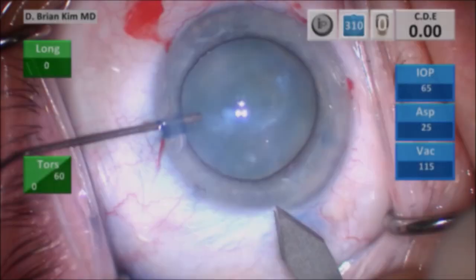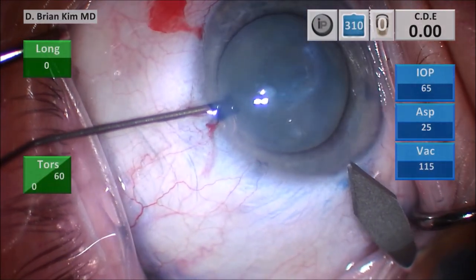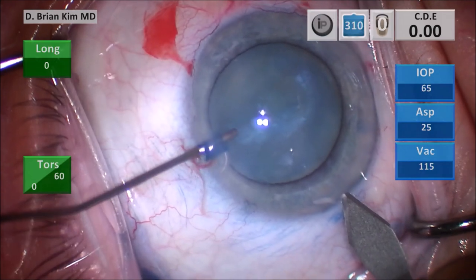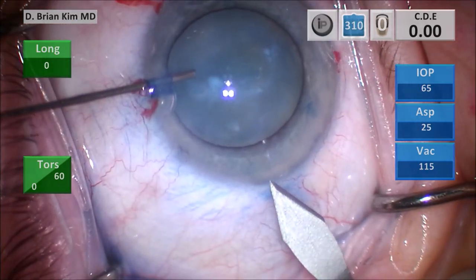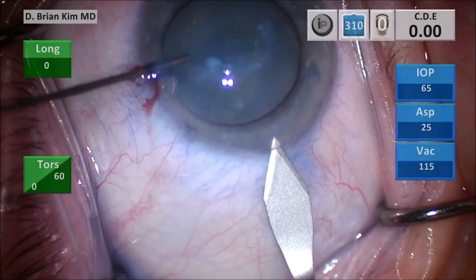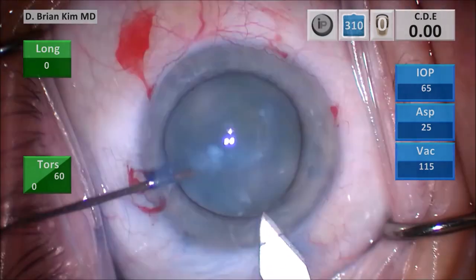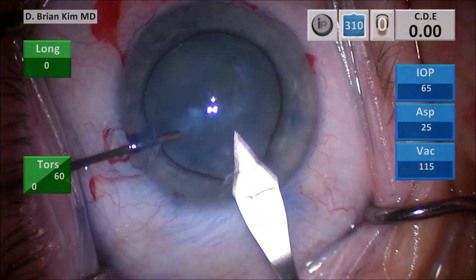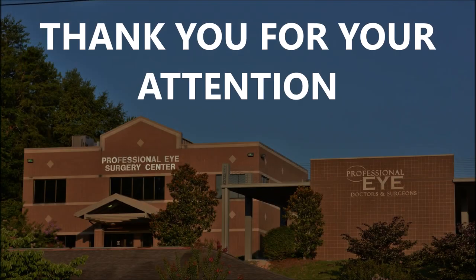So this is again why I prefer a triplanar corneal incision. With a triplanar corneal incision, you have much more stroma on the external most component of the incision, and this is why I think a triplanar corneal incision is a better incision. I hope this was helpful to you, and thank you for your attention.